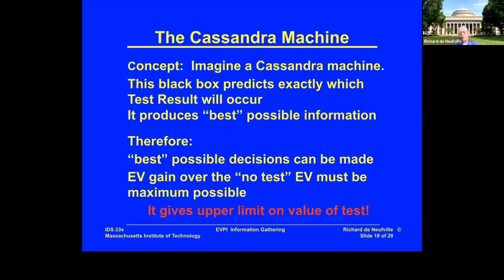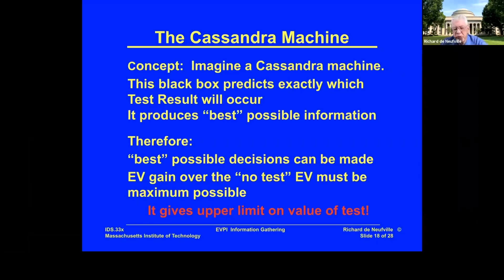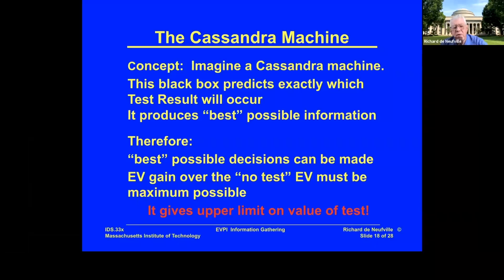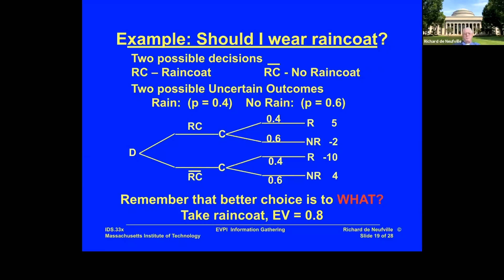So what we can do — if we can't get the real value — is at least set some limits on it, and that's what this hypothetical Cassandra machine does. The further beauty of it is that the calculation for the Expected Value of Perfect Information is almost trivial. The first time you try to do it you'll flounder a bit because you're not used to it, but basically it's a very simple and transparent device. Let me give you an example.